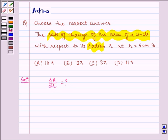We know the area of a circle is given by A = πr².